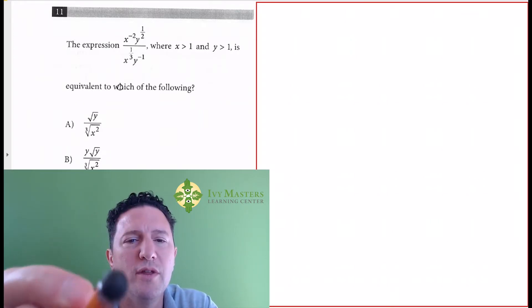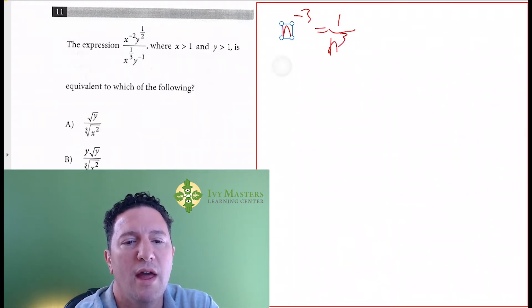So what do you need to know for this? You need to know that if you've got n to the negative 3, that equals 1 over n to the positive 3. You've got to know that if you've got 1 over n to the negative 4, you've got n to the positive 4.